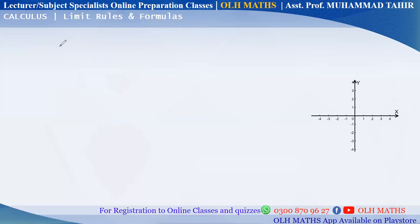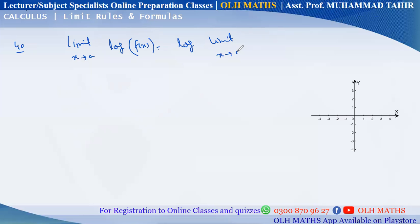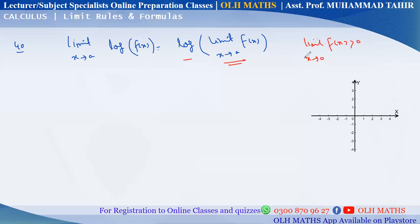Another result: the limit and log operations can be interchanged. That is, the limit as x approaches a of log(f(x)) is the same as log of the limit as x approaches a of f(x), with an additional condition. The condition is that the limit of f(x) must be greater than zero, since the logarithm is only defined for positive numbers.